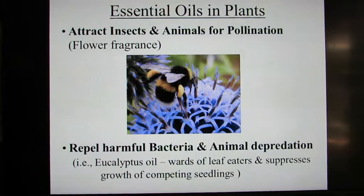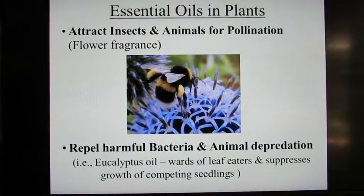But why do plants produce essential oils? There are several reasons. A primary one is flower fragrances to attract insects for pollination, particularly bees. The bees are gathering pollen for their honey, but in the process they are pollinating the plants, which is very important — our agricultural industry would probably collapse without the presence of bees.